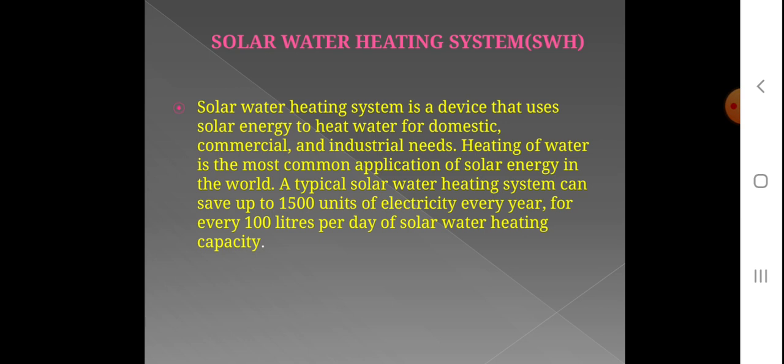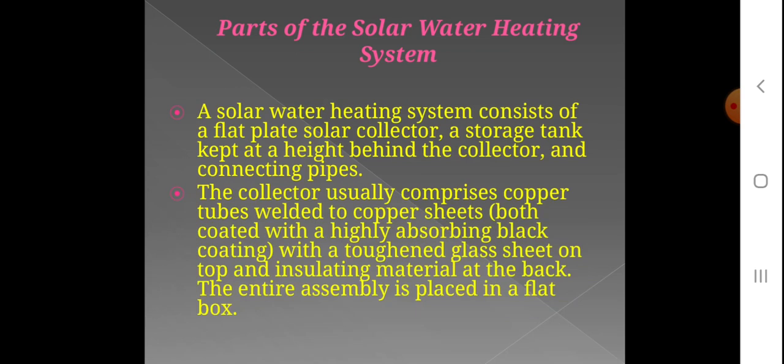If you have electricity, you can heat up using the solar water heating system. In a day you can save up to 10 units of electricity. If you have a 100-liter solar water heating system, you can save up to 100 liters per day of solar energy. Now I will show you the parts of a solar water heating system.